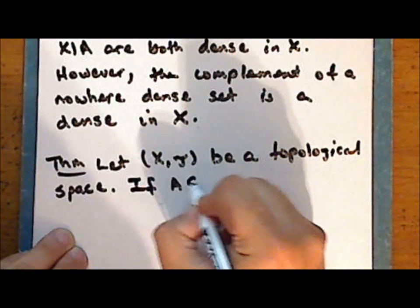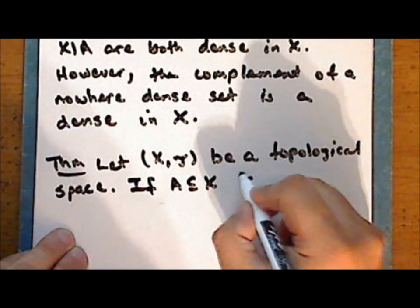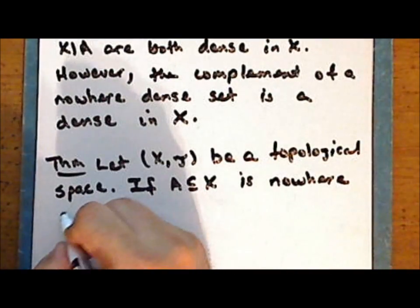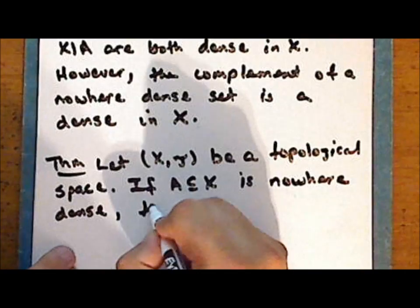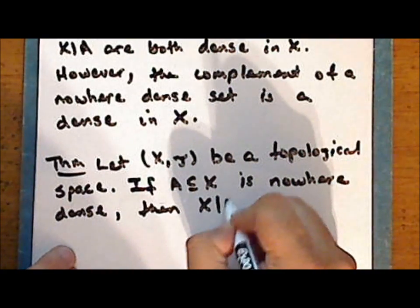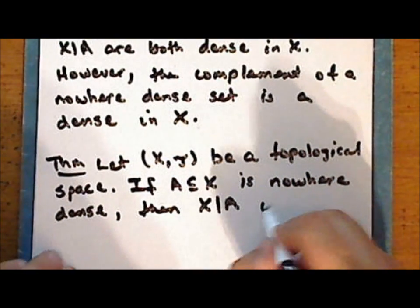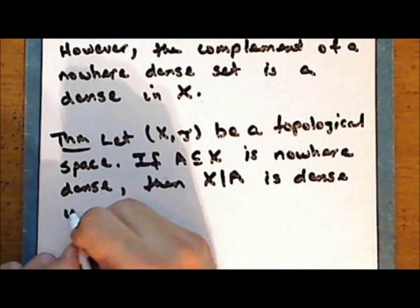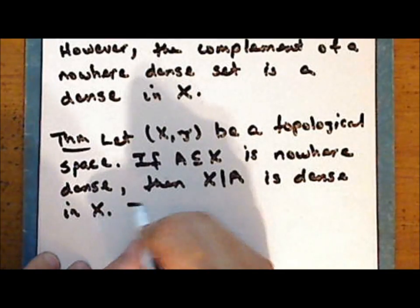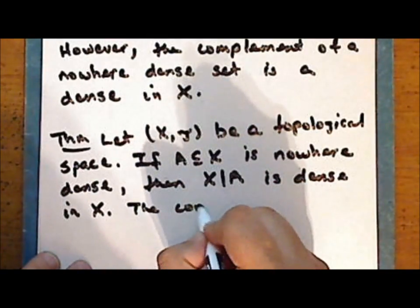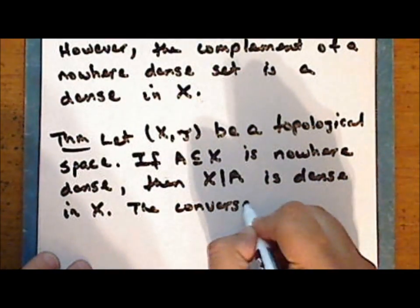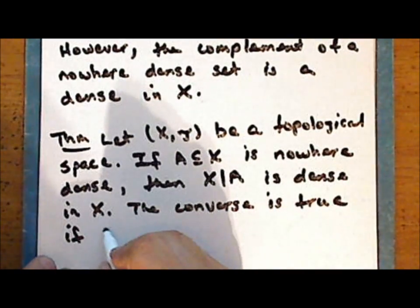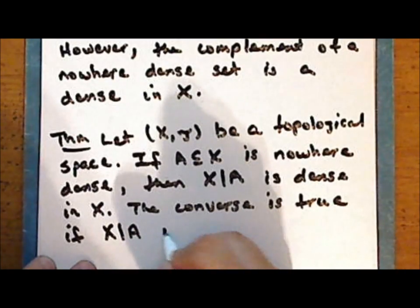If the subset A of X is nowhere dense, then the complement of that nowhere dense set is dense.